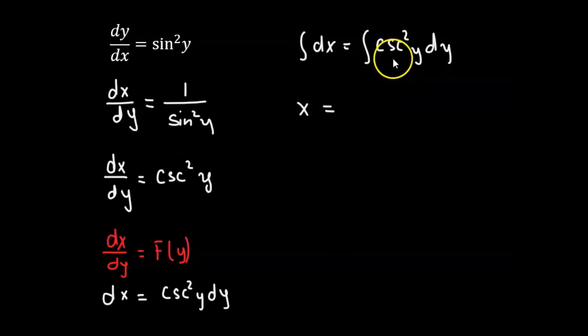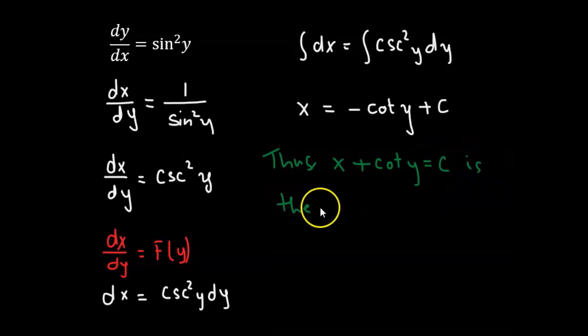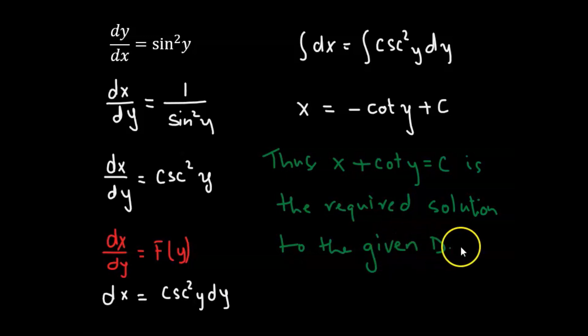equals integration of cosecant squared y, which will be negative cotangent of y plus the constant of integration. Thus x plus cotangent of y equals C is the required solution to the given differential equation.